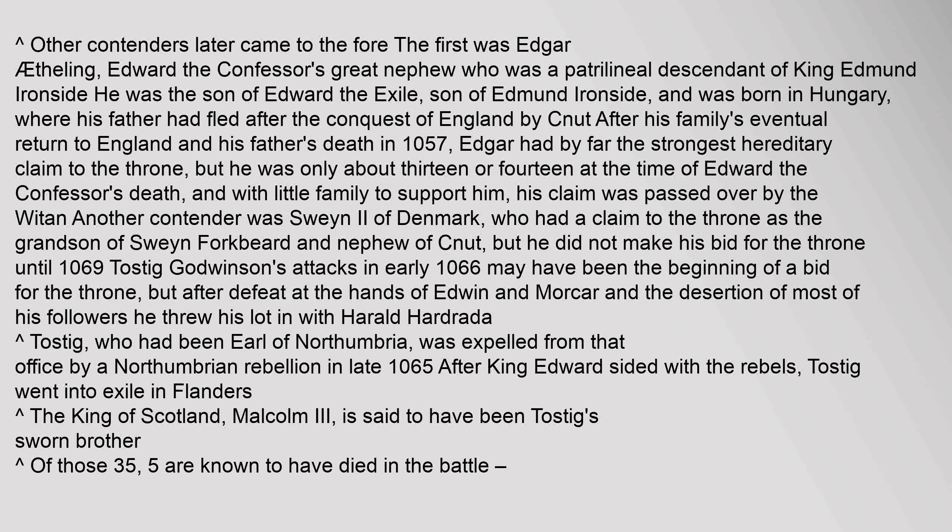Tostig, who had been Earl of Northumbria, was expelled from that office by a Northumbrian rebellion in late 1065. After King Edward sided with the rebels, Tostig went into exile in Flanders. The King of Scotland, Malcolm III, is said to have been Tostig's sworn brother. Of those thirty-five companions of William at Hastings, five are known to have died in the battle.